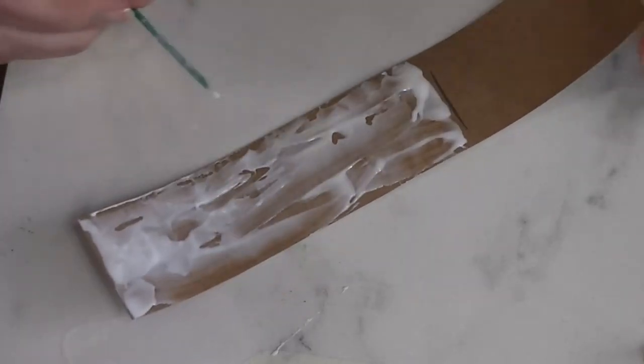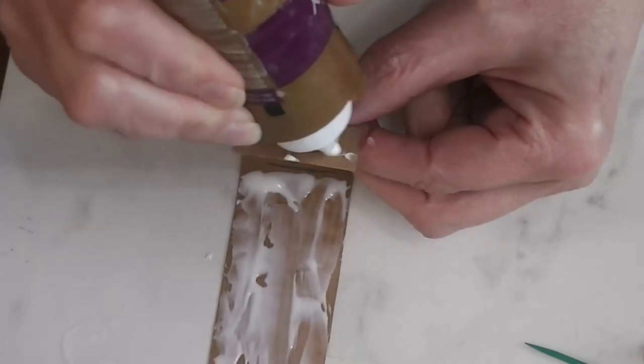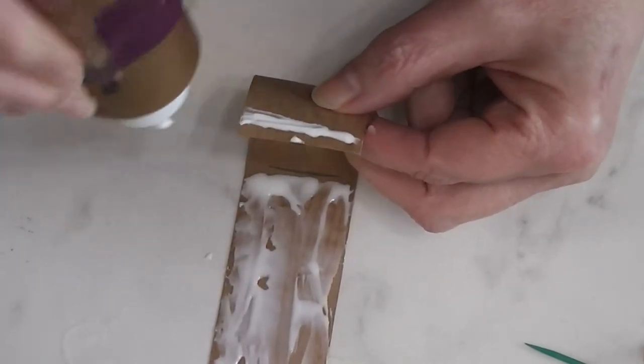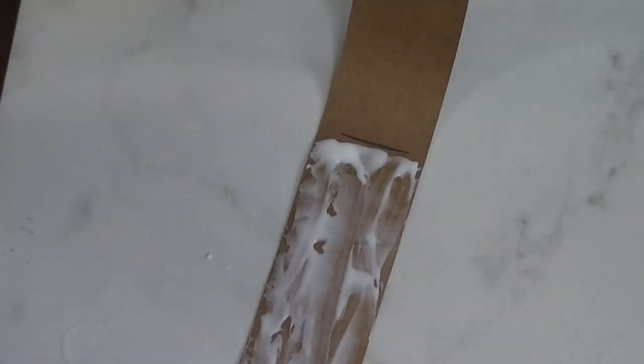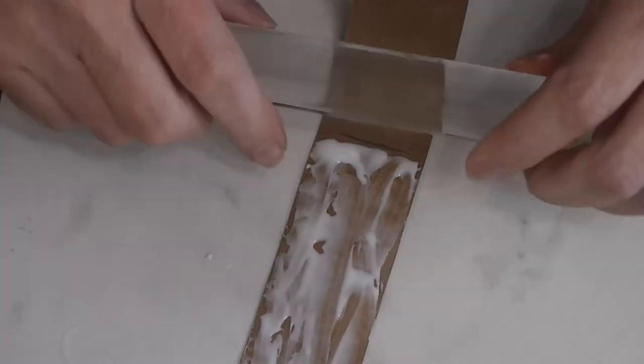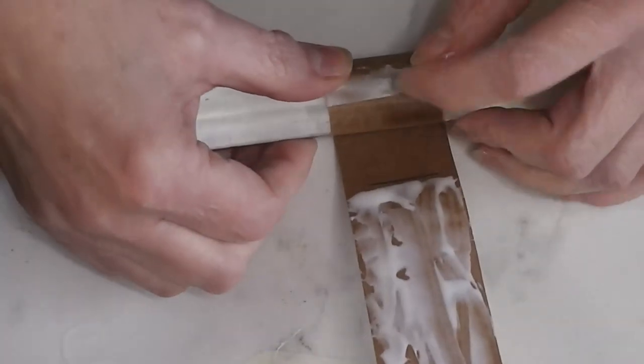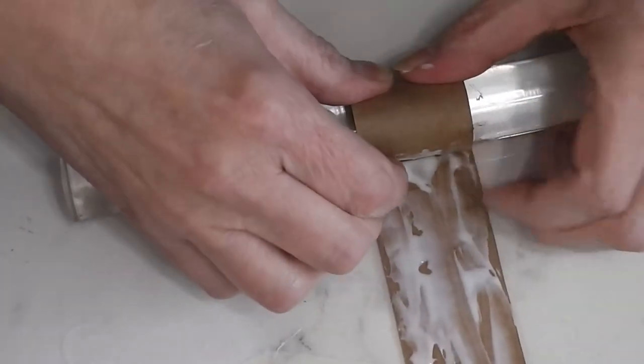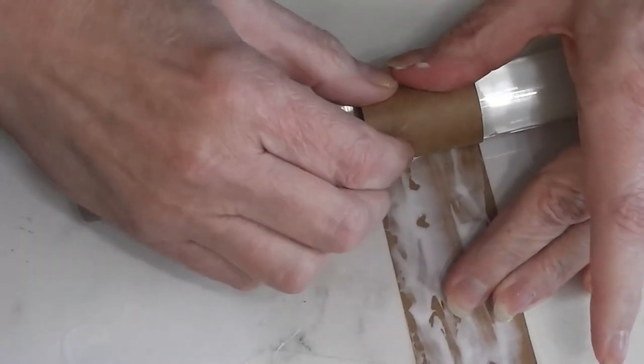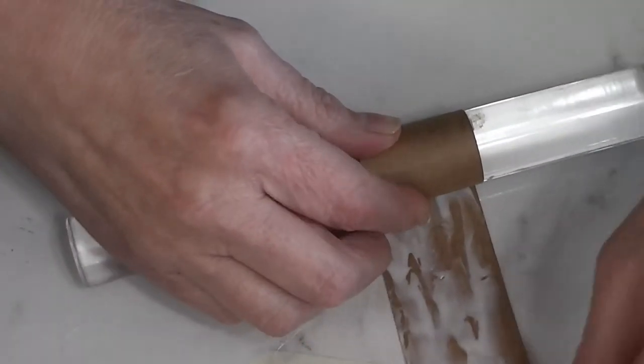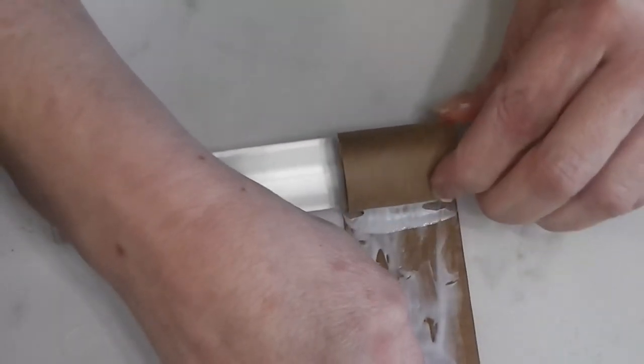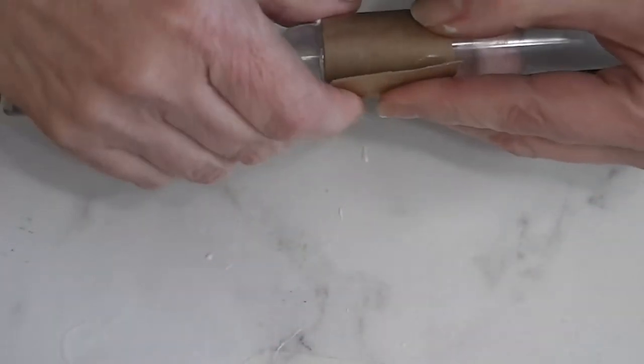You want this glue completely dry before we start adding clay and put it in the oven. Now I get asked every once in a while why I use the paper core. There's a couple of reasons. This is a much more stable core than trying to use clay. It gives me a nice, smooth, finished interior if I want to display this clay pot without a plant in it.